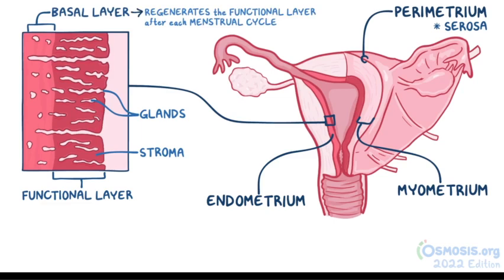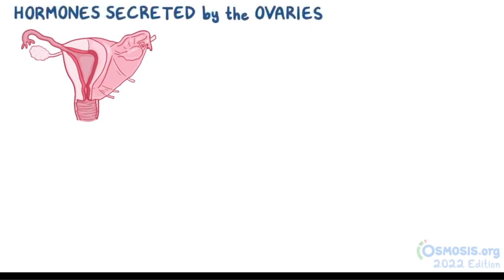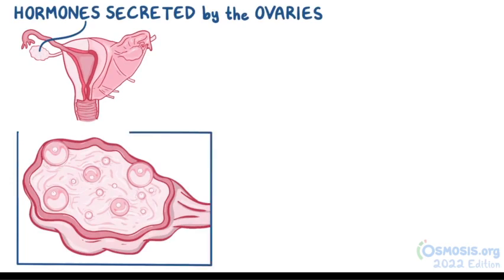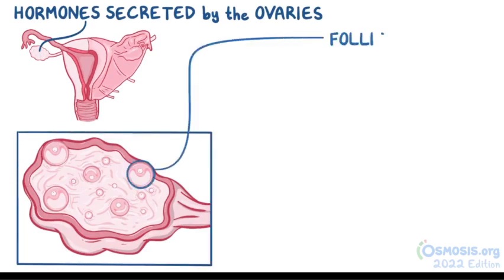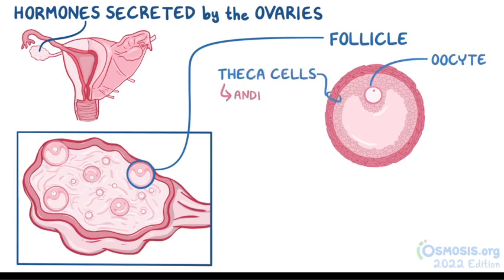The basal layer regenerates the overlying functional layer after each menstrual cycle. The growth of the functional layer is regulated by hormones secreted by the ovaries. Each ovary is made up of ovarian follicles; each follicle consists of an oocyte surrounded by theca cells, which secrete androgens, and an inner layer of granulosa cells, which secrete estrogen.